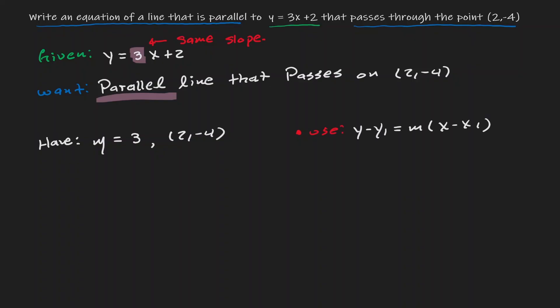So now it's just a matter of plugging in this information. m is equivalent to 3, and my coordinate point is (2, -4).